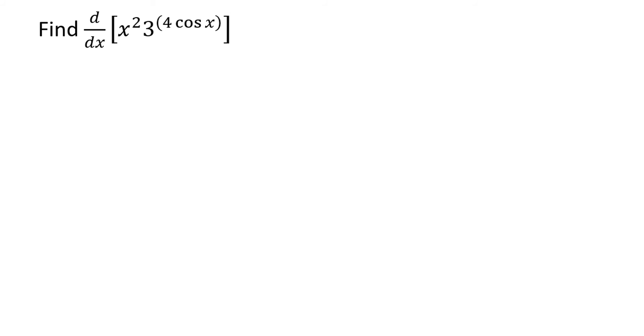Here we are asked to find the derivative of x squared times 3 to the 4 cosine x power. It looks really nasty at first. We've got a couple different functions going on. We've got something crazy in the exponent. We'll see it actually turns out kind of nicely.